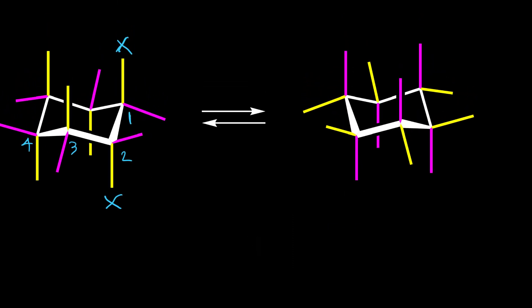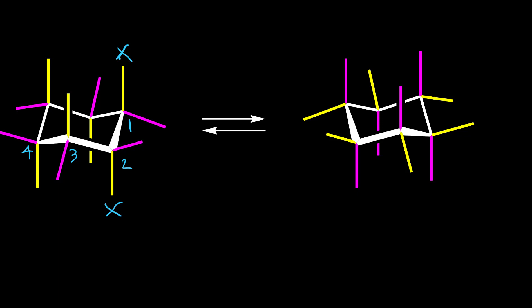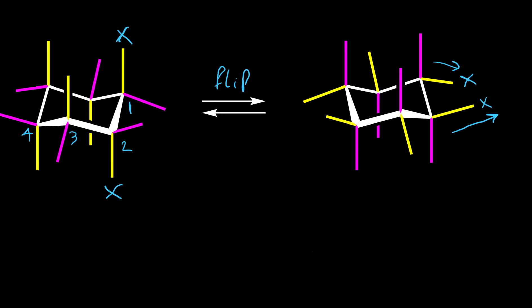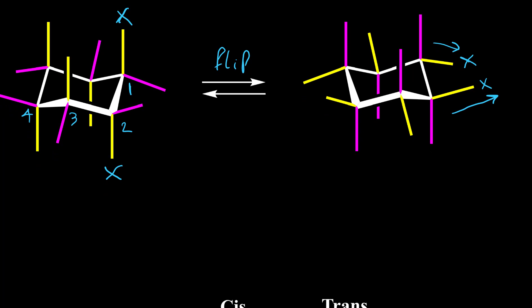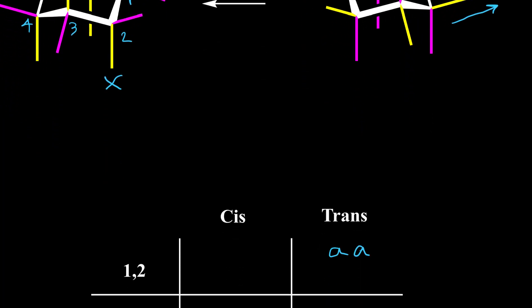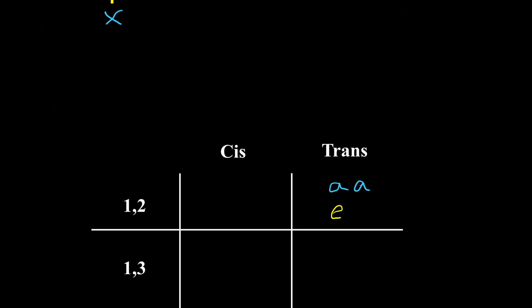Then we have ring flip — all equatorials convert to axials and all axials convert to equatorial. So if we have the ring flip, these two X groups go to equatorial. Again these two groups are trans because one of them is pointing up and another one is pointing down. So equatorial-equatorial on carbons one and two also gives the trans isomer.